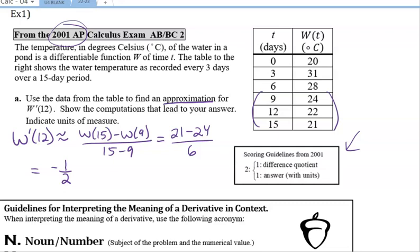The first point is for the difference quotient. Meaning whether or not I subtracted and evaluated correctly, my first point comes from either having this or from having this. So if I write down one of those two things, I get the first of the two points. And then my second point comes from evaluating that and then giving an answer with the unit. If there's units in the problem, I have to have units in my answer.